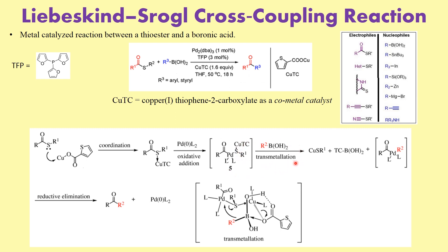The next step is the most important step, which is what we call transmetallation. Transmetallation is the step by which the aryl group is transferred onto the carbonyl. There is a proposed transition state for how this happens, which looks pretty complicated. As a result of the transmetallation, we eject certain species and the resulting complex undergoes reductive elimination to give palladium 0 plus the desired ketone. So you started from a thioester and a boronic acid and you form the ketone moiety.